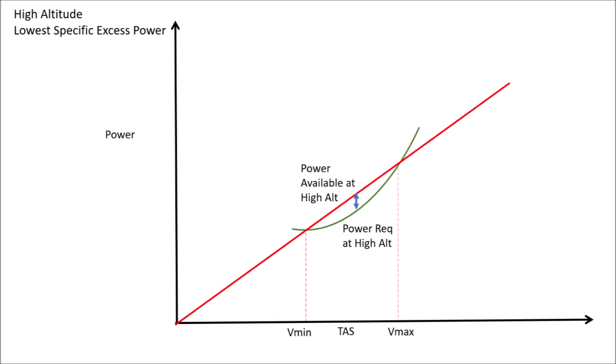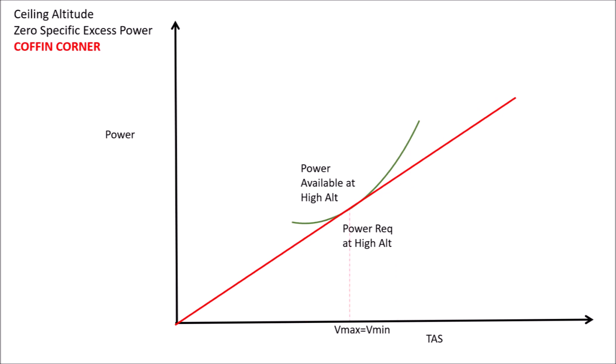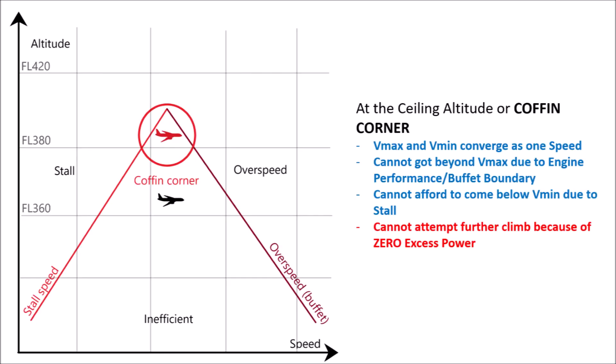At higher altitudes, excess power required for climb drastically reduces, so the difference between Vmin and Vmax becomes negligible. As we keep climbing further, we will reach the ceiling altitude wherein the excess power will become zero — both the minimum velocity and the maximum permissible velocity will merge into one. This point is called coffin corner.